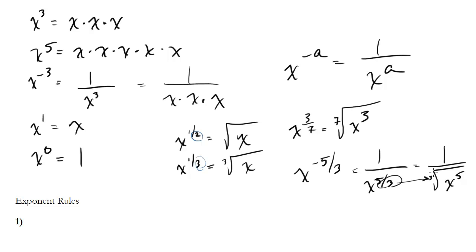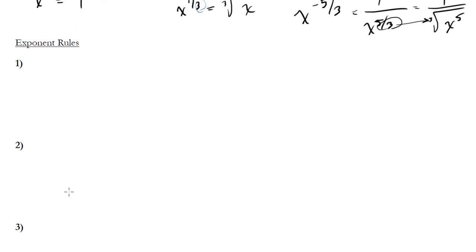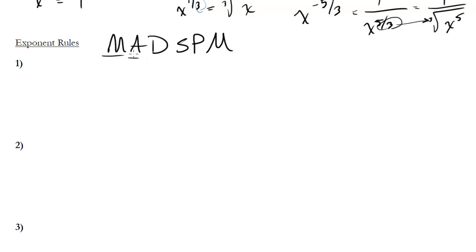Those are some basic definitions of what exponents are. The most important thing from this unit is the exponent rules — these are a must to remember. They come up decently often, and if you know the rules, they're relatively easy points. One way to remember them is 'mad spam': when you multiply exponents, you add them; when you divide exponents, you subtract them; and when you raise an exponent to a power, you multiply.